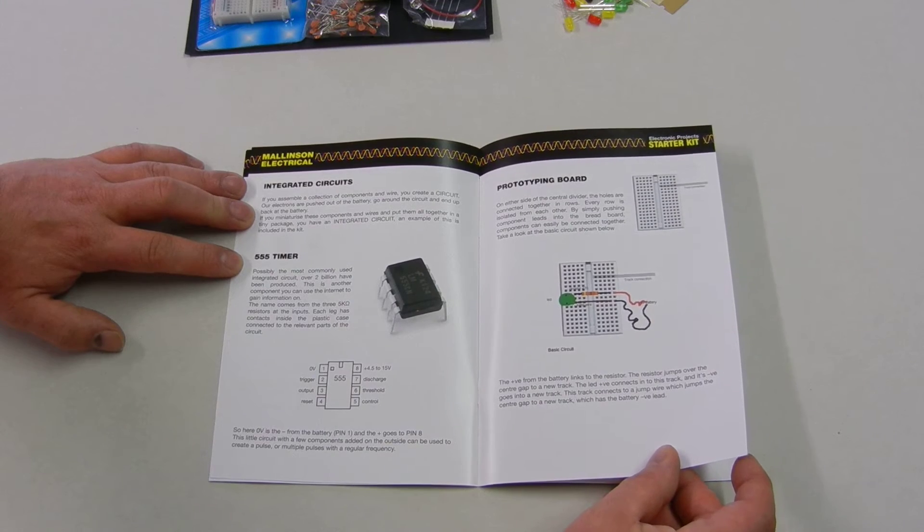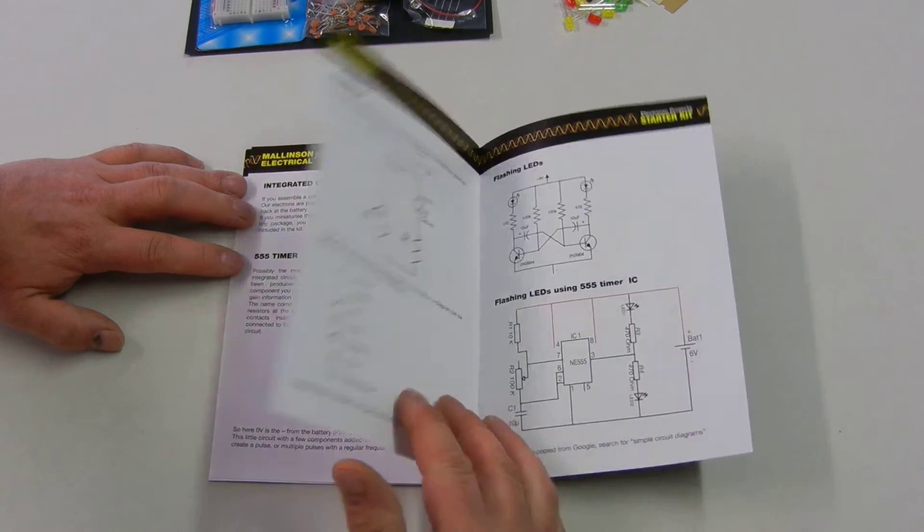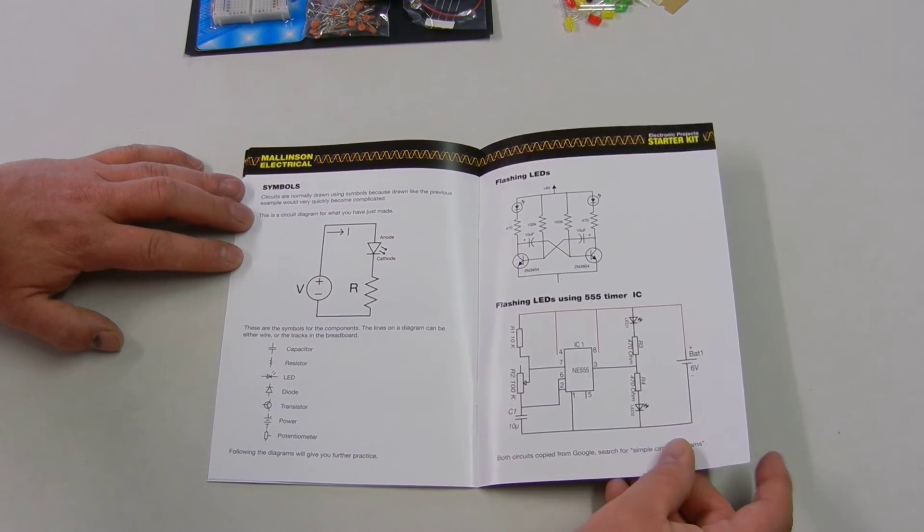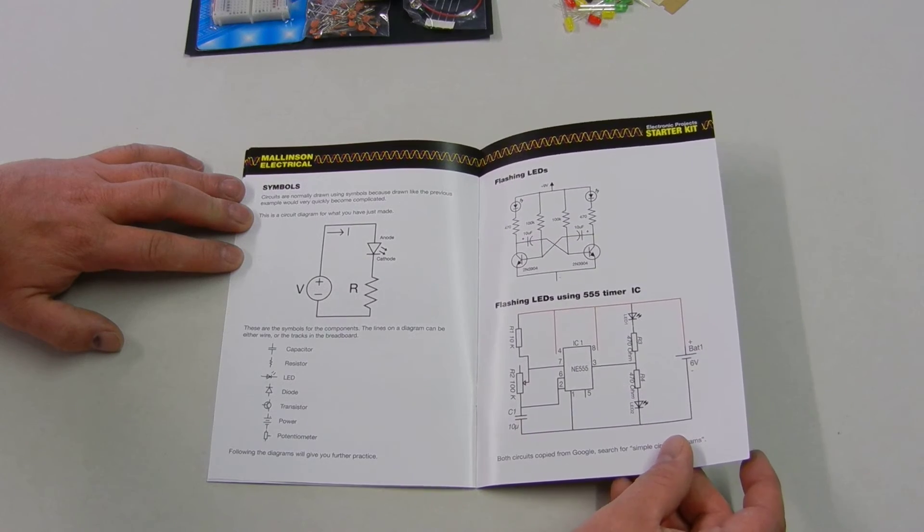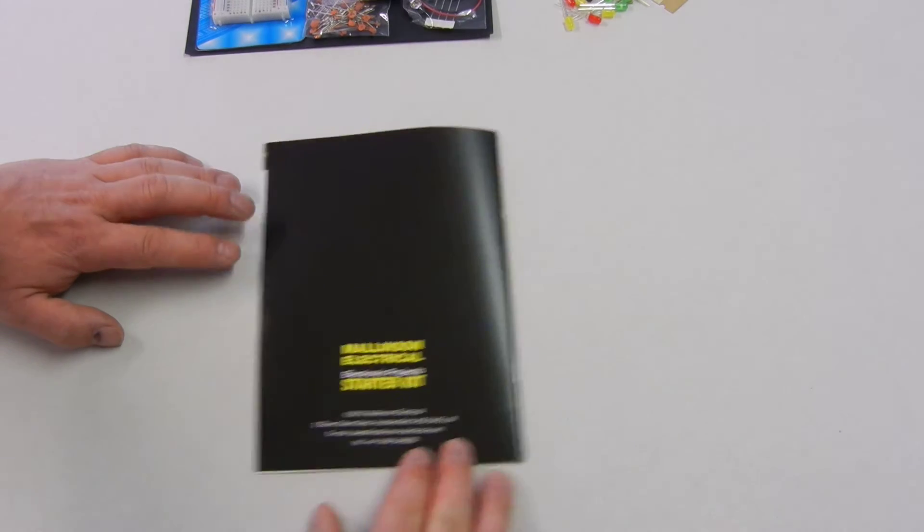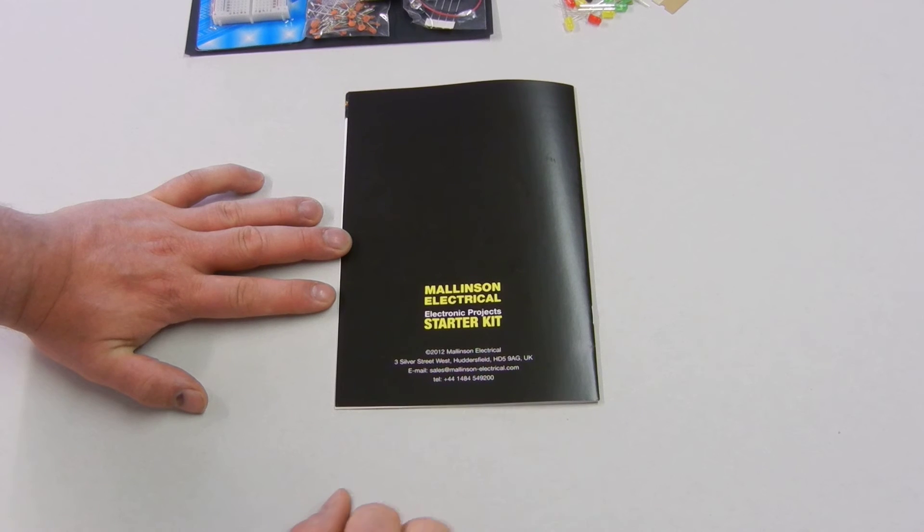Now we've got the prototyping board and how we use it, and then finally a couple of little circuits just to get us going. Any problems, address is on the back, so is the phone number.